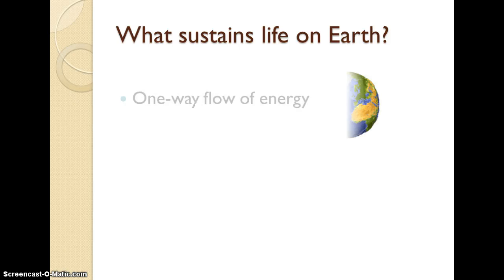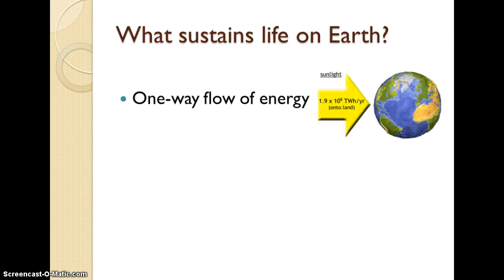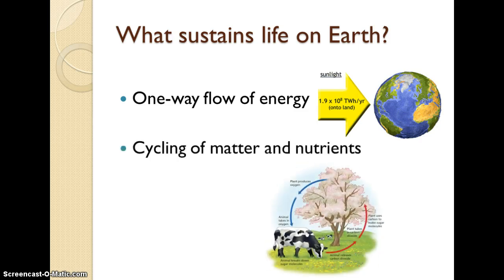There are three things that sustain life on Earth. One is the one-way flow of energy — we get energy from sunlight in the form of radiation. The second is the cycling of matter and nutrients; we'll get into the biogeochemical cycles in a later unit. And the thing that drives these cycles of matter is gravity.